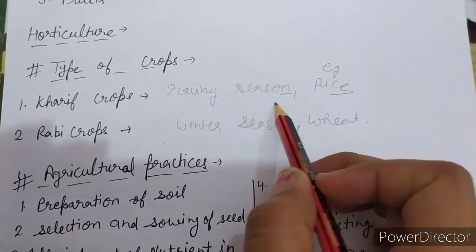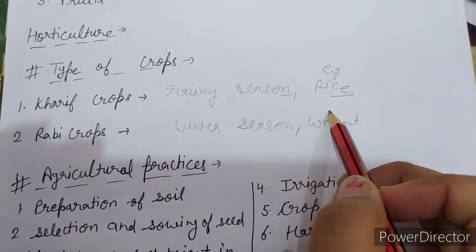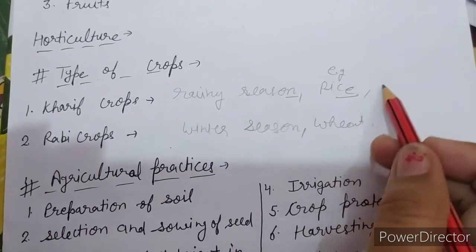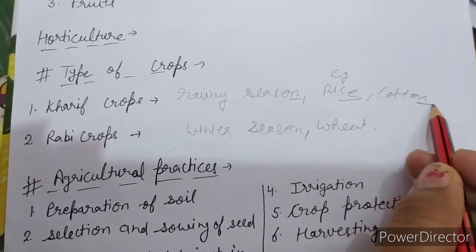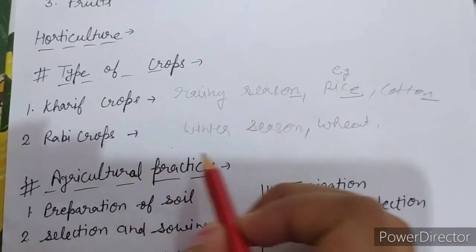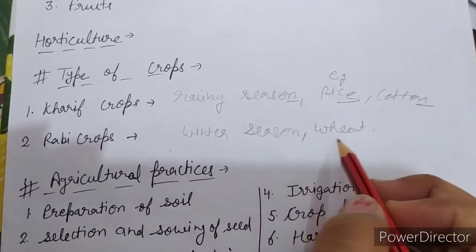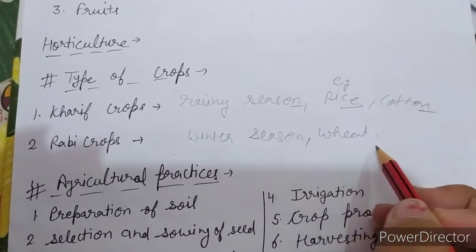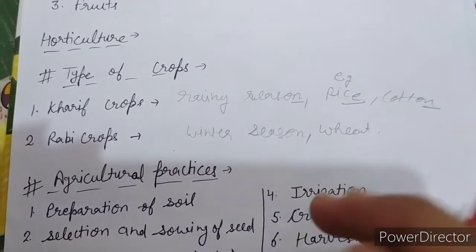So Kharif crops are those which are grown in the rainy season — examples: rice, soya bean, groundnut, cotton. Rabi crops are those which are grown in the winter season — examples: wheat, gram, pea, mustard, linseed.